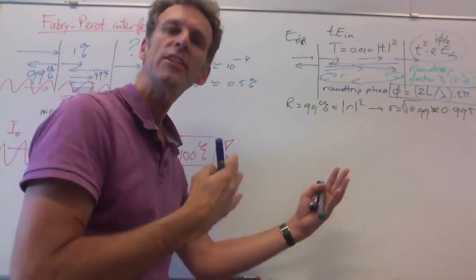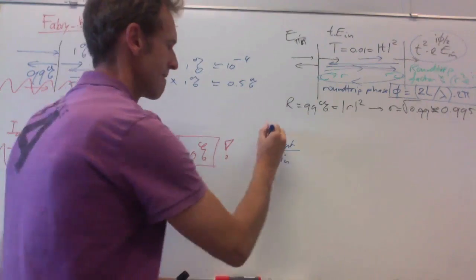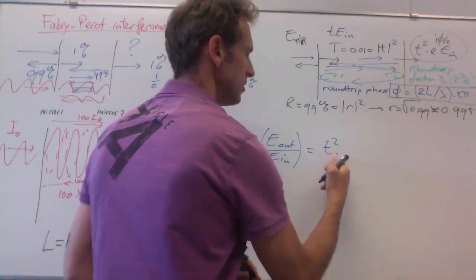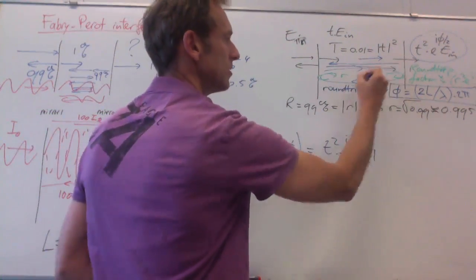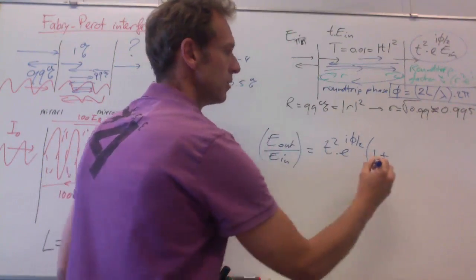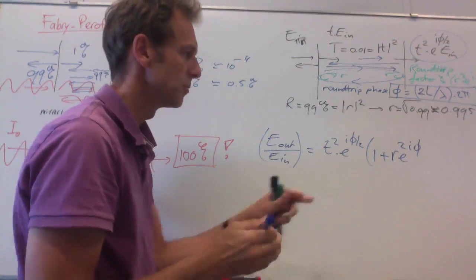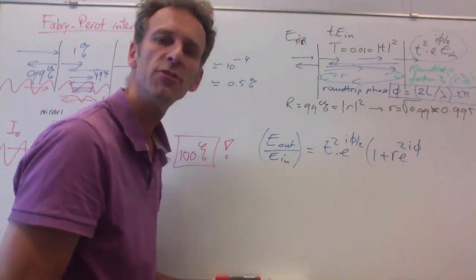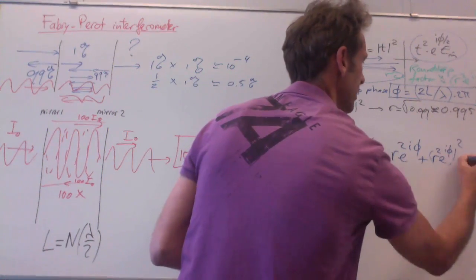You get that factor on the first round-trip, you get an additional factor on the second round-trip, so you get some factor to the power n. So let's add this all up, and look at the output field relative to the input field. The first trial, as explained, you get this factor t squared e^(iφ/2). But then the light makes a round-trip. In the round-trip, it acquires a factor r squared e^(iφ). So the second trial of the light has an amplitude which is slightly less, less by a factor of r squared. And there is a phase factor because of the round-trip.